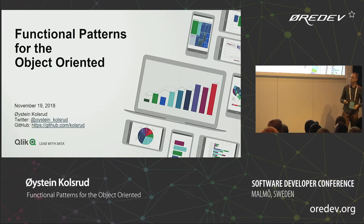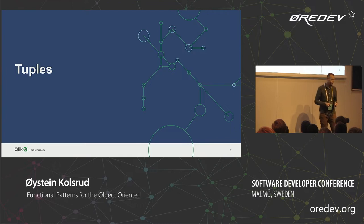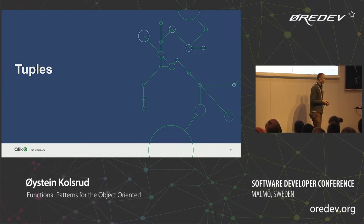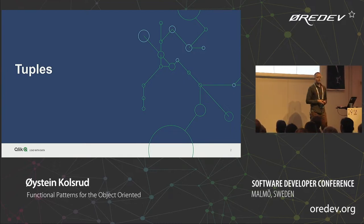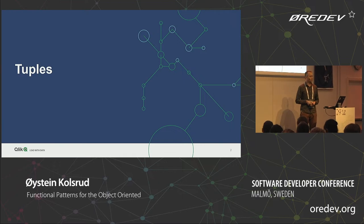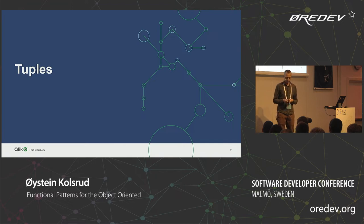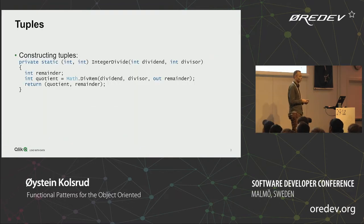I'll give a small recap of what these features are. Tuples is basically an anonymous data structure, just like lambda expressions is an anonymous function. Tuples are used to anonymously group data into one single entity. A simple example could be something like this — a basic wrapper function for one of the functions you find in the Math library.